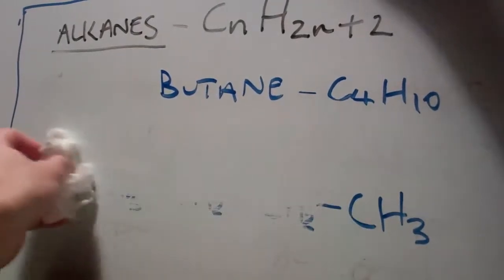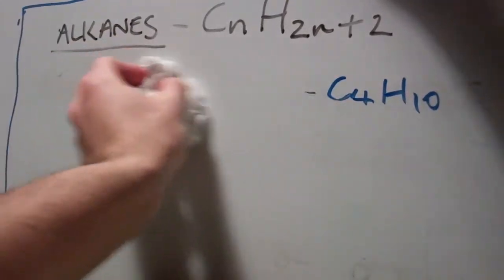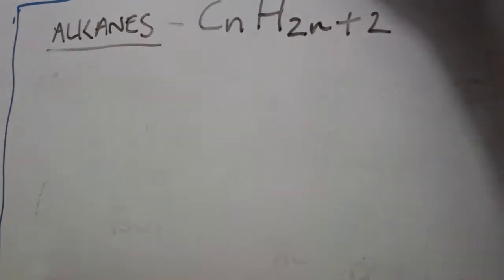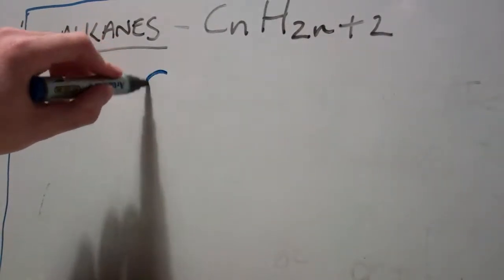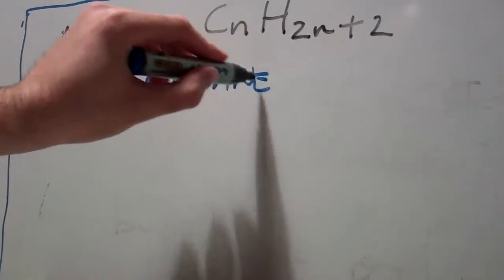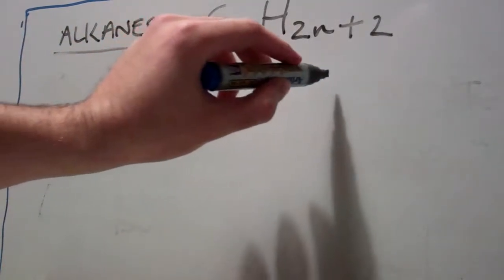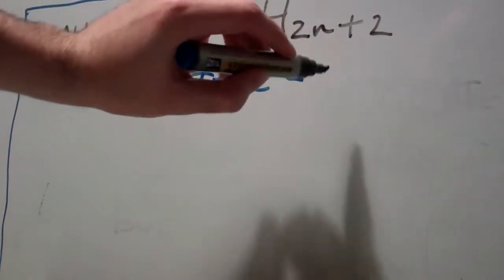As you can imagine, as you increase the number of carbons and follow the formula, you will just continue adding CH2s in the middle and cap both ends with the CH3 until you have your required number of carbons.